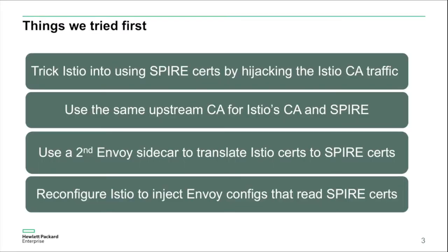Before we started this project, we embarked on a number of different easier approaches that didn't involve modifying Istio in order to make Istio and Spire more compatible. The first approach was tricking Istio into using Spire certificates by essentially hijacking the traffic to the Istio certificate authority. This actually worked in early versions of Istio because those certificate requests to the Istio Citadel certificate authority weren't validated in any way. But that hasn't worked in Istio for over a year now because finally those Istio certificate requests are actually encrypted and validated.